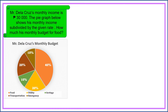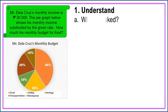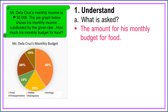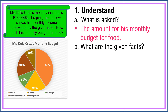How are we going to solve the problem? We're going to use the first step plan. The first step is we're going to understand the problem. We should know what is asked. What is asked in this problem? The amount for his monthly budget for food.